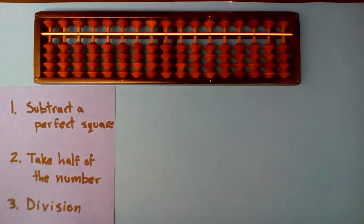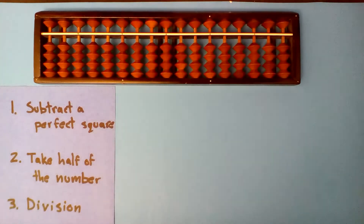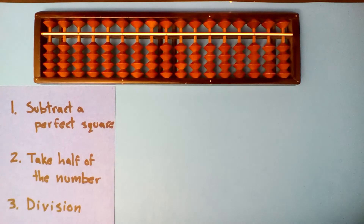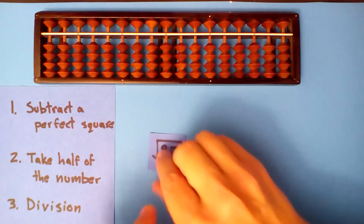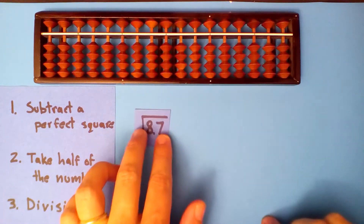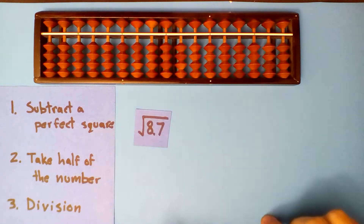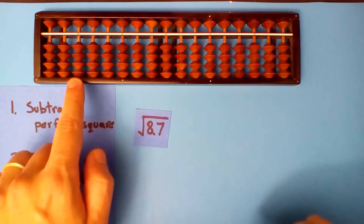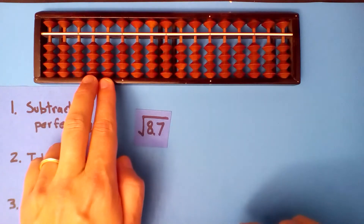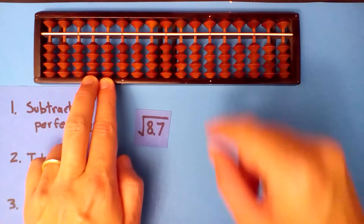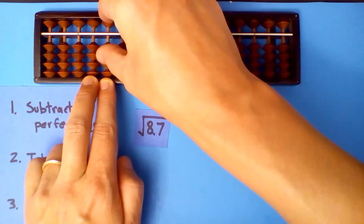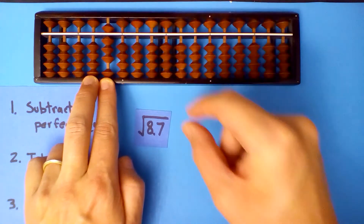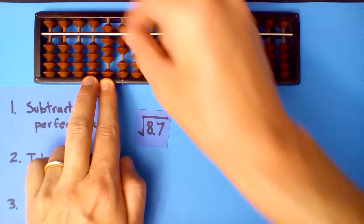Hello all. Let's do some more examples of taking square roots. So our first example, the square root of 8.7. We'll set up the root here, so we'll set up the 8.7 here.